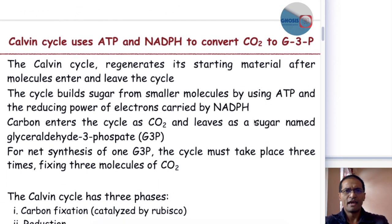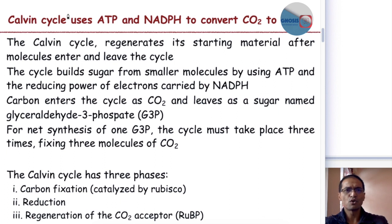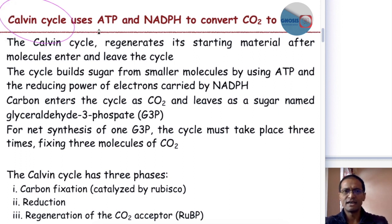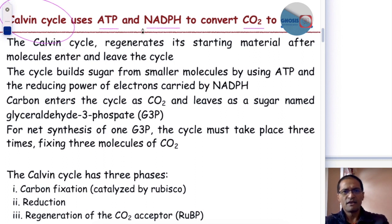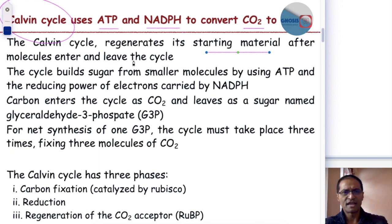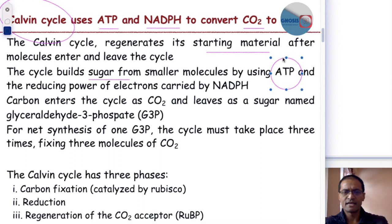The light-independent reaction is also what we term the Calvin cycle. The Calvin cycle uses ATP and NADPH to convert carbon dioxide to glyceraldehyde-3-phosphate. In the cycle, the Calvin cycle regenerates the starting material — whatever molecules enter, undergo reaction, and leave the cycle, the starting material is regenerated. The cycle also builds sugars from smaller molecules using ATP and NADPH.